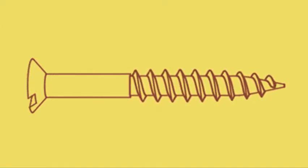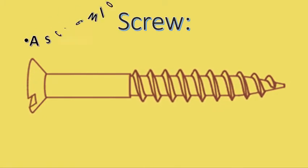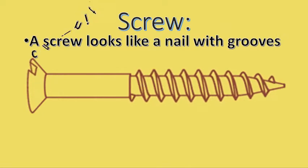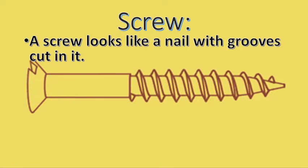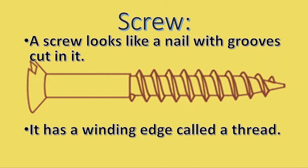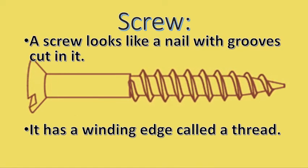Now it is time to learn the last simple machine, which is the screw. A screw looks like a nail with grooves cut into it. In the background you can see a nail-like structure — it is not a simple nail but is provided with cuts that make the movement of a screw easy. It has a winding edge called the thread. So, a screw looks like a nail but is provided with grooves, and it has a winding edge called the thread.